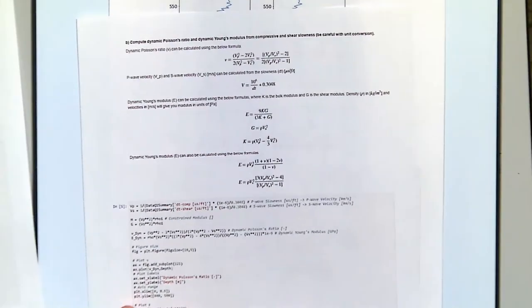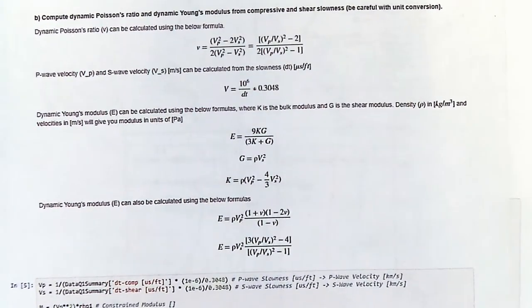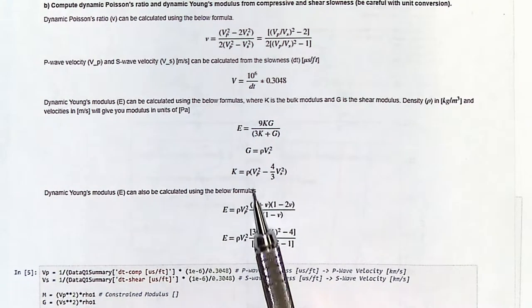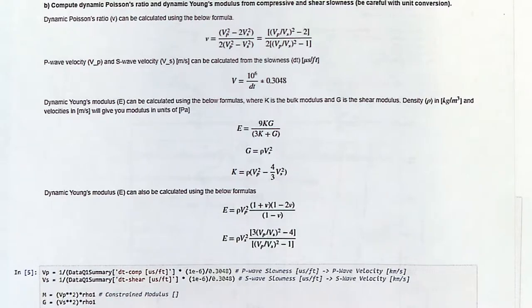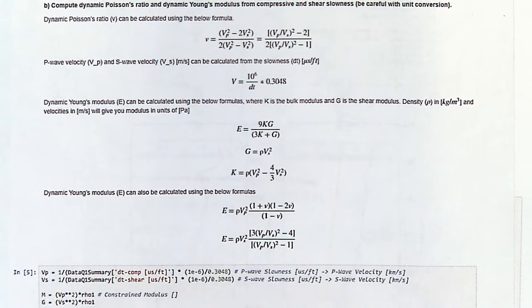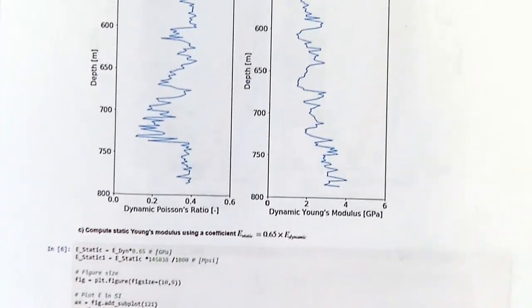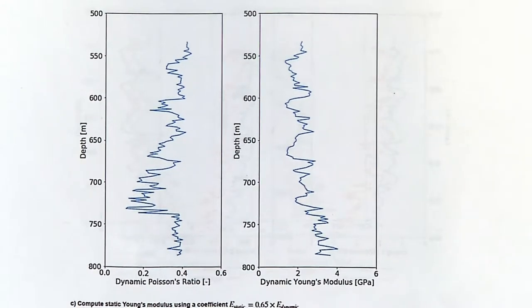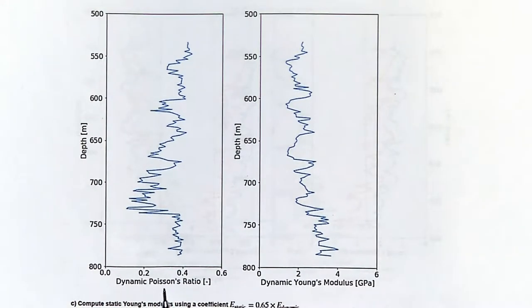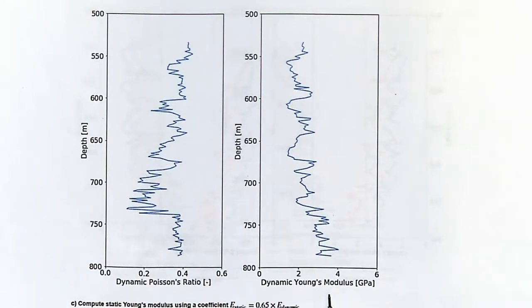When you analyze the data and utilize these equations, you can calculate Young's modulus and Poisson's ratio. When you plug in that data you get something that looks more or less like this — Poisson's ratio measured from the P-waves and the dynamic Young's modulus measured from the logging data as well.